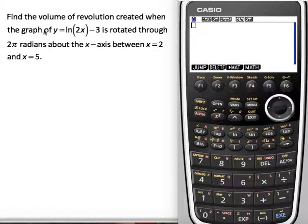Okay, we're looking at a volume of revolution question here. I want the volume of revolution created when the graph of y equals log 2x minus 3 is rotated through 2 pi radians about the x-axis between x equals 2 and x equals 5.